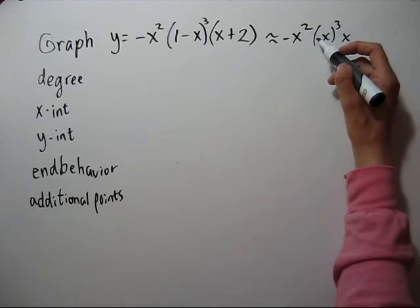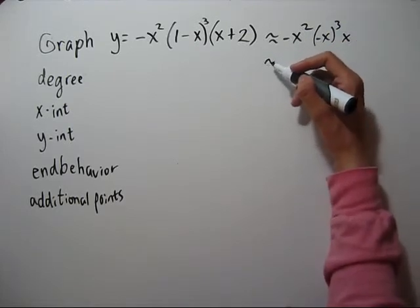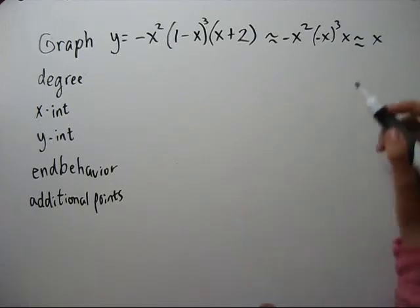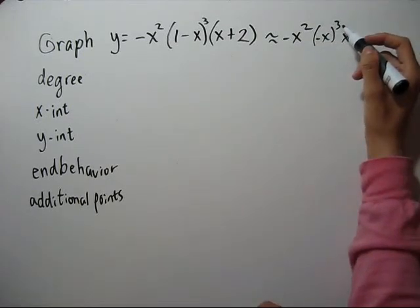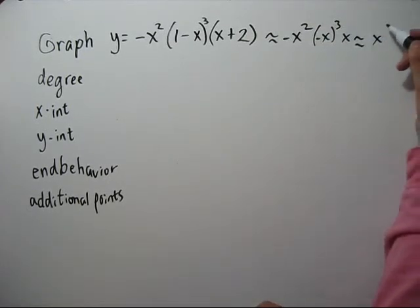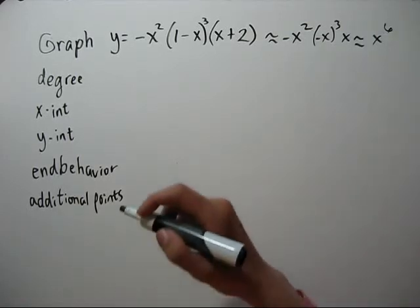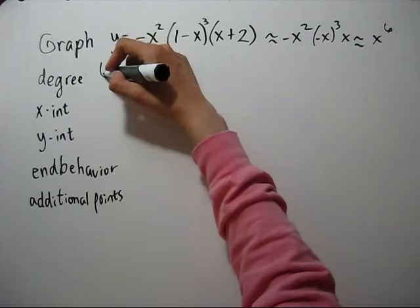A negative cubed is still negative, so negative, negative make a positive. And our power of x, we have a squared and a cubed, that makes x to the fifth. Another x is x to the sixth. So our degree is six and it's even.